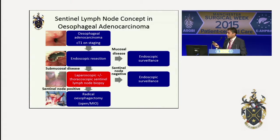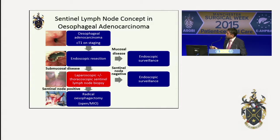This is the algorithm we're really looking towards — an added step where a minimally invasive technique of identifying central nodes means that those with submucosal disease and negative central nodes could be safely followed up with endoscopic surveillance, avoiding the need for radical surgery.